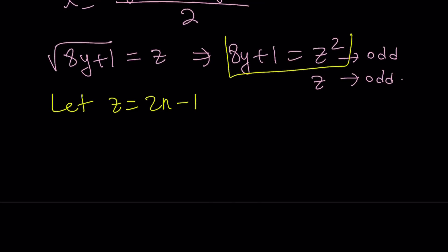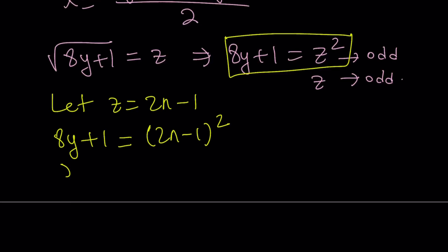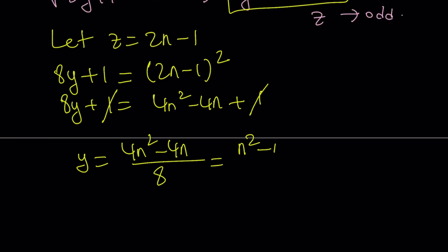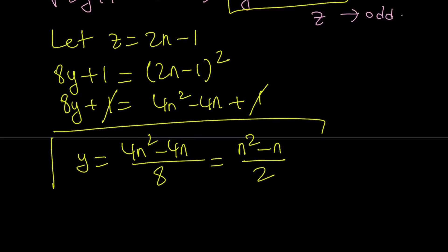Let's replace z with 2n minus 1. We get 8y plus 1 equals (2n minus 1) squared, which is 4n squared minus 4n plus 1. The 1 cancels out. We divide both sides by 8 because we want to solve for y. Since this is 4 times n squared minus n, we can divide numerator and denominator by 4, giving us y equals n squared minus n divided by 2.